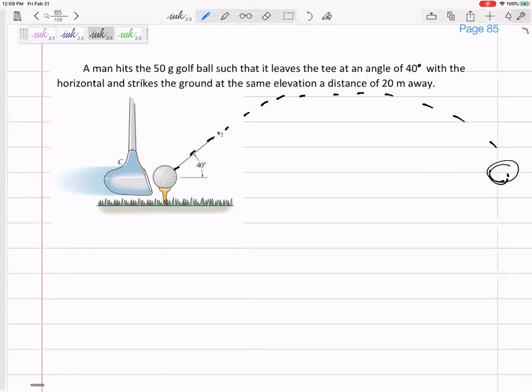Now for the impulse momentum, we only use that for the collision. We only use that immediately before and immediately after the collision. So right here we can do conservation of momentum.